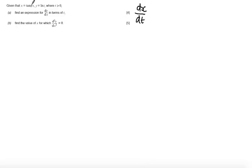You may not be familiar with how to differentiate tan to the minus 1 of t. Look in the formula booklet and you will find the definition. If you differentiate tan to the minus 1 t, you get 1 over 1 plus t squared.